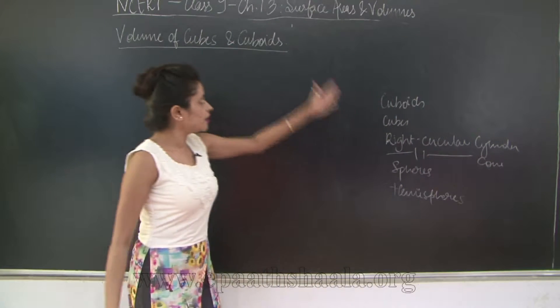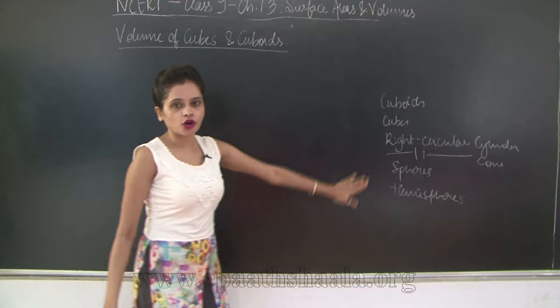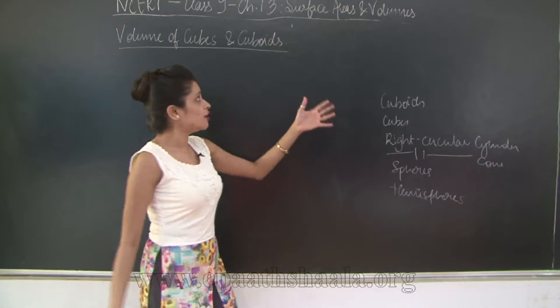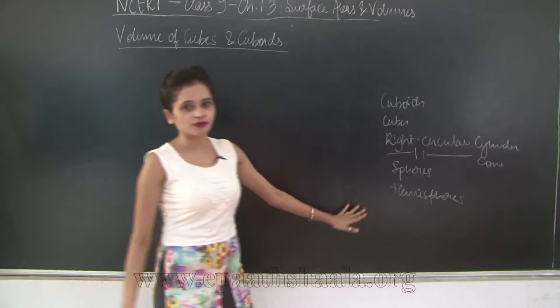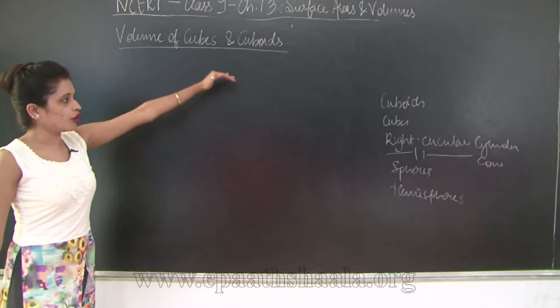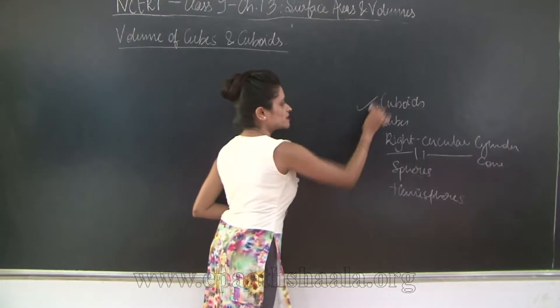So we have covered the surface areas of these different objects. Now we are going to move our focus to volumes of these objects, starting with volume of cuboids and cubes.